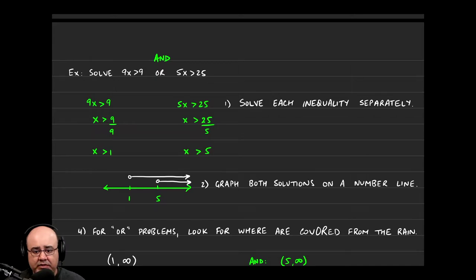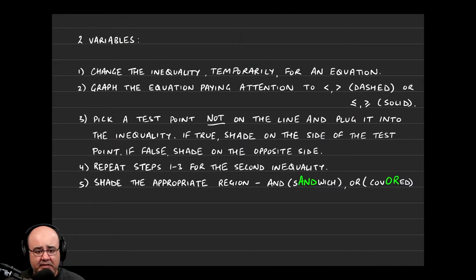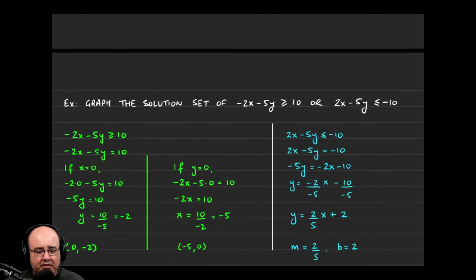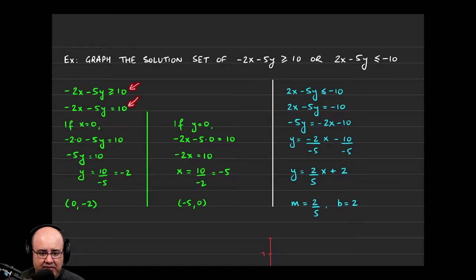So the rules that we have to play by are going to be different. The first thing you want to do is rewrite the inequality that you're given and change it to an equation. This is just done temporarily so that we can graph it.